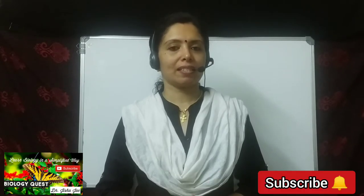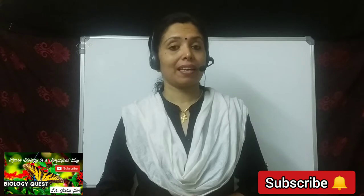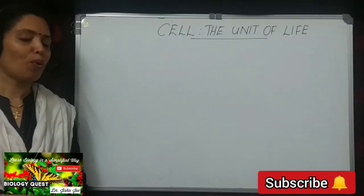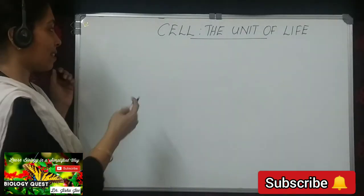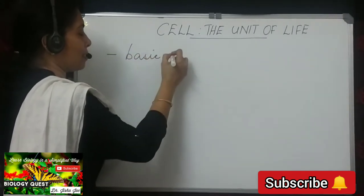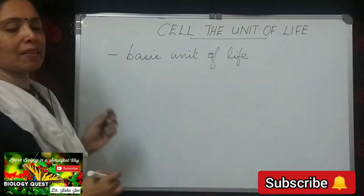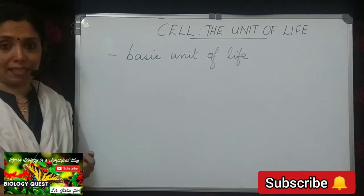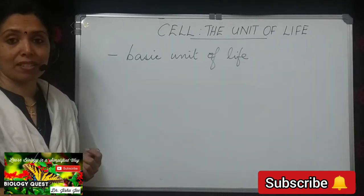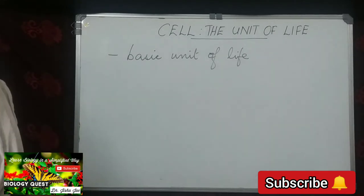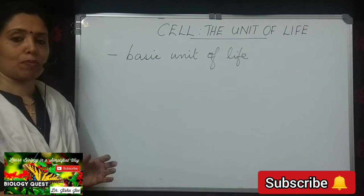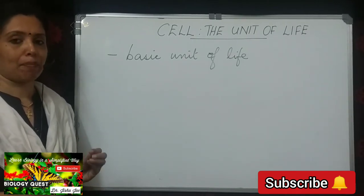Hello dear children, welcome back. I'm Dr. Jisha Joe. In this session we are starting with a new chapter: Cell, the Unit of Life. This is the eighth chapter of Class 11 NCERT Biology. A cell is the basic unit of life, and cellular organization is one of the important characteristic features of all living organisms — whether plants or animals are made up of cells.